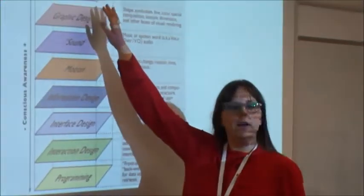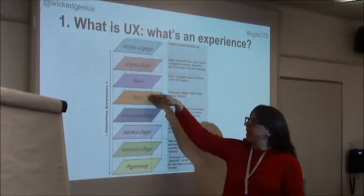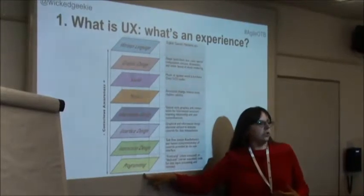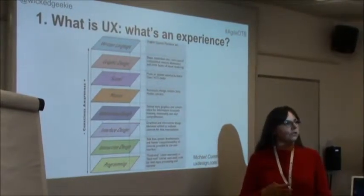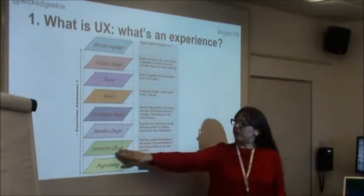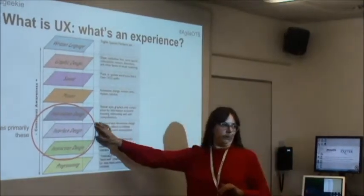Very clever folks such as Michael Cummings have created this kind of diagram to explain what creates the experience someone has of a digital product. It goes on an axis of conscious awareness. The things anyone is most consciously aware of are written language, aesthetics such as graphic design, sound, or motion. The things they're least consciously aware of — way down — is programming. In the middle we have interaction design, interface design, and information design. That's the sweet spot — this is primarily where user experience is.